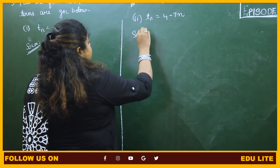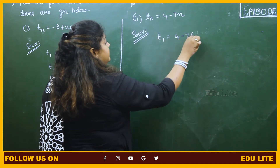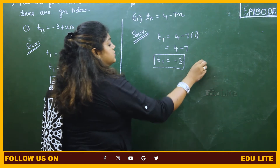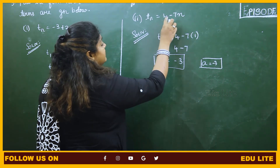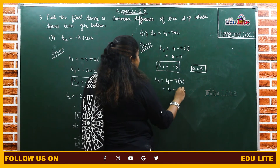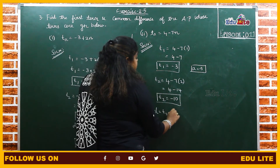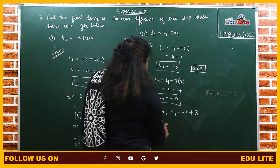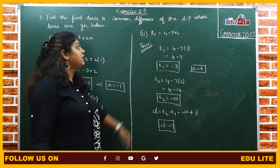For the second subdivision, substituting n equals 1: T1 equals 4 minus 7 into 1 equals 4 minus 7 equals minus 3. So A equals minus 3. Substituting n equals 2: T2 equals 4 minus 7 into 2 equals 4 minus 14 equals minus 10. D equals T2 minus T1 equals minus 10 minus (minus 3) equals minus 7. So A equals minus 3 and D equals minus 7.